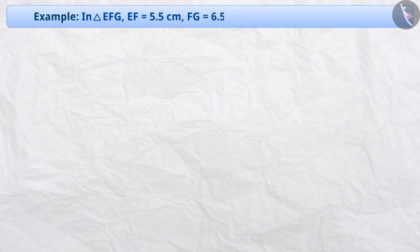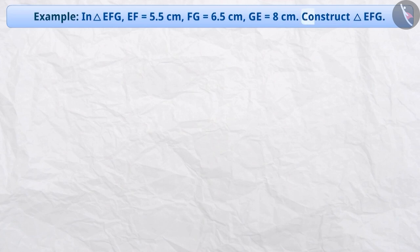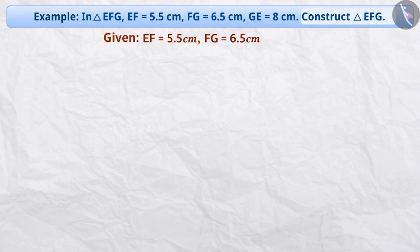In triangle EFG, EF is equal to 5.5 cm, FG is equal to 6.5 cm, and GE is equal to 8 cm. Construct triangle EFG. Here, we have to construct triangle EFG with these three given side lengths.